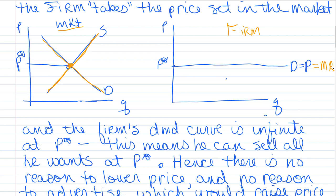There's no reason to lower price because you can sell all you want at the current market price. And there's no reason to raise price through things like advertising expenditures, because your product is just like everybody else's and it doesn't differentiate you. So demand, price, and marginal revenue are all the same for the perfectly competitive firm, and they are determined by the market, not the firm.